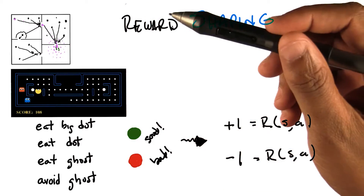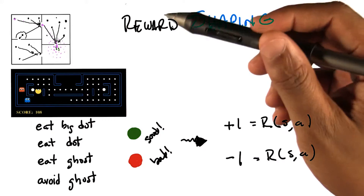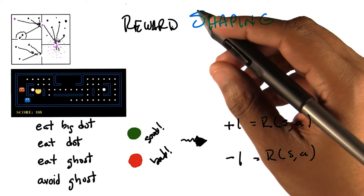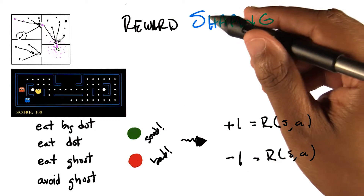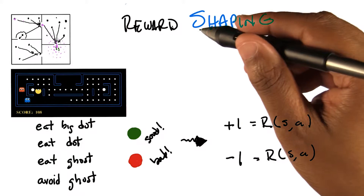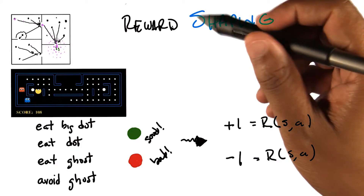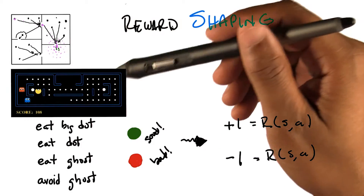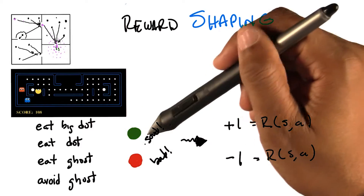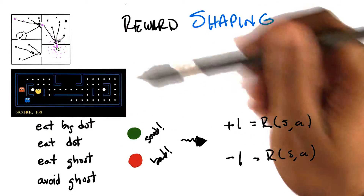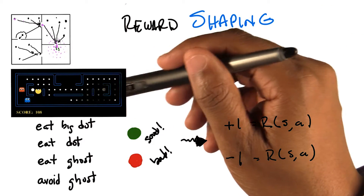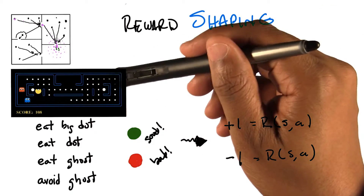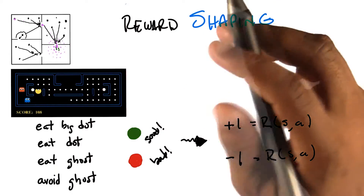You can show this works pretty well, and there's been a lot of work on this. We've provided some papers on this for the students to read about. You do better by treating these things as reward shaping than if you didn't, because really they're hints as you move along about where you ought to be and the kinds of things you ought to do.